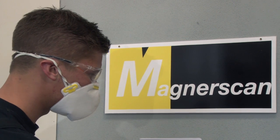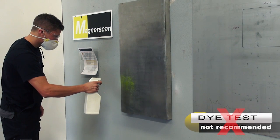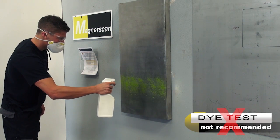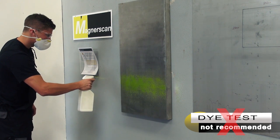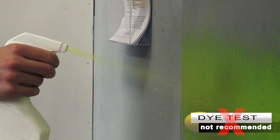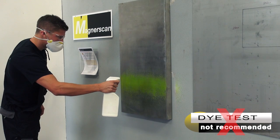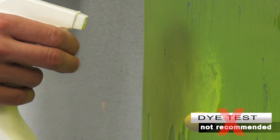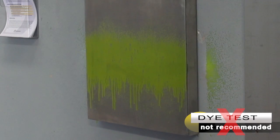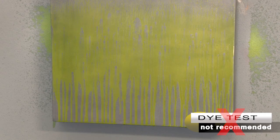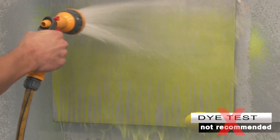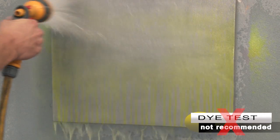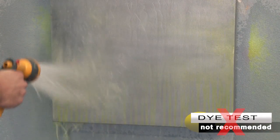The second method uses fluorescent dyes. The dye is applied and left for up to half an hour. It is then washed off with a hose pipe. The dye should remain in the defects, but often it is washed out of large cracks, leaving them undetected.